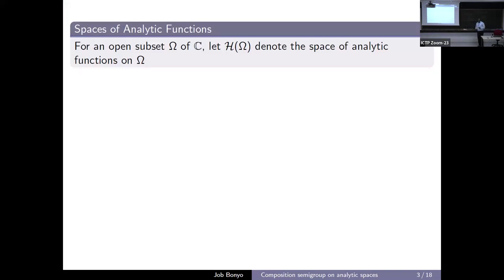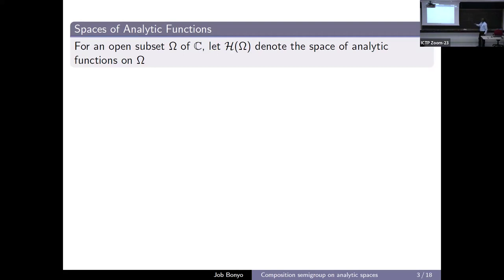Now I want to define spaces of analytic functions. I will use omega to denote an open subset, so omega can be D or the upper half plane. I will use omega for general purposes, and H of omega will denote the space of analytic functions on omega — functions mapping our open subset of C to C itself.